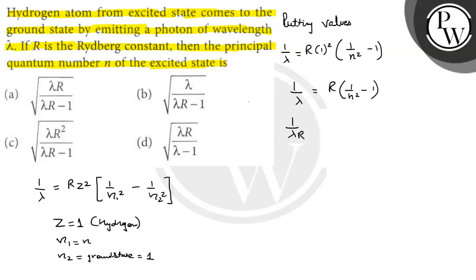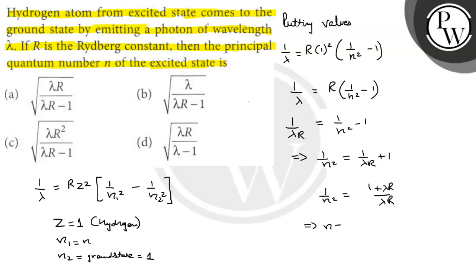Solving further: 1/n² = 1 + λR, all divided by λR. Therefore n² = λR / (1 + λR), and so n = √(λR / (1 + λR)). I hope you understood it well. Best of luck!